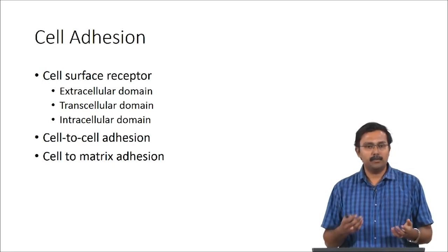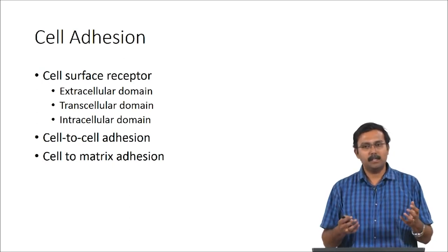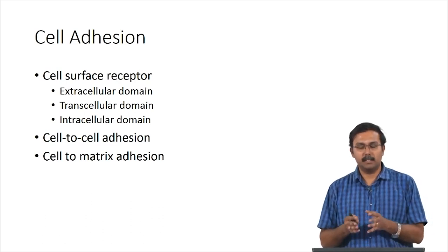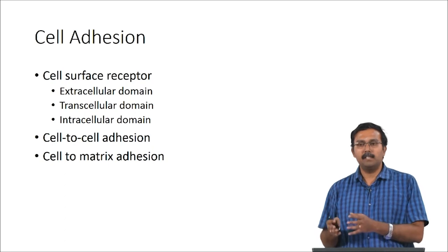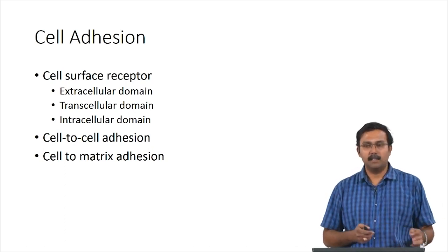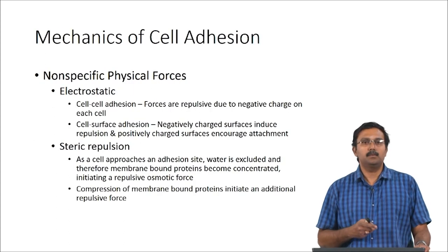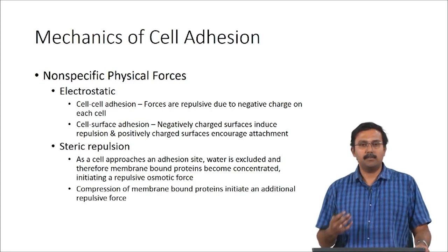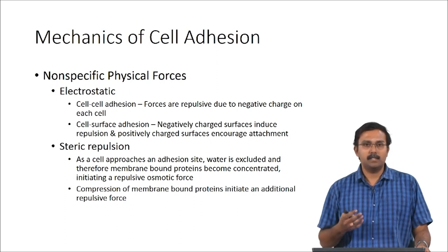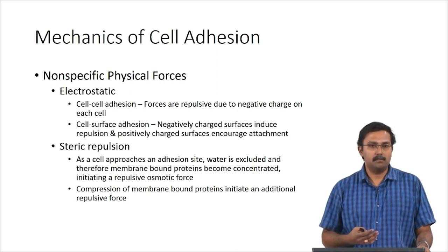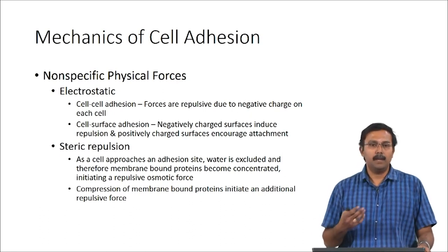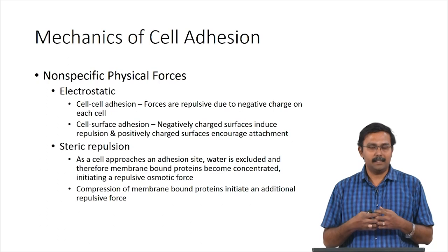It is important to know the difference between the two — they are usually uniquely different. Some types of junctions are more commonly seen in cell-to-cell interactions whereas others are more commonly seen in cell-to-matrix interactions. When talking about the mechanics of cell adhesion itself, there can be non-specific physical forces such as electrostatic or steric repulsion or van der Waals forces which could play a role in the interaction of cells.